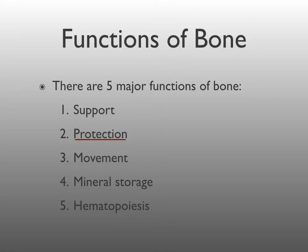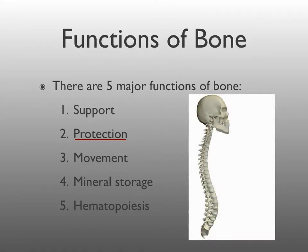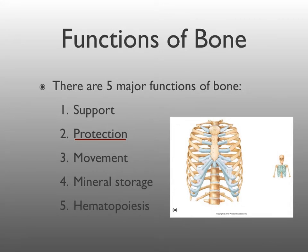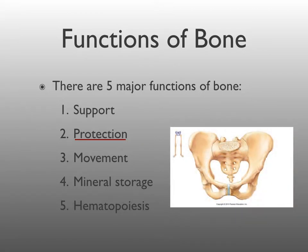Bone is also important because it forms a protective case around many vital organs. The skull forms a helmet-like case that surrounds and protects the brain and special sensory structures, including the eyes and structures of the ear. The vertebral column surrounds and protects the spinal cord. The thoracic cage surrounds and protects the heart and lungs. And the pelvis forms a protective girdle around the reproductive organs and urinary structures like the bladder.